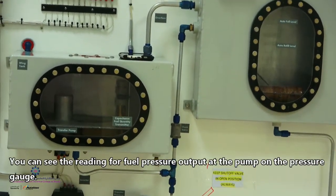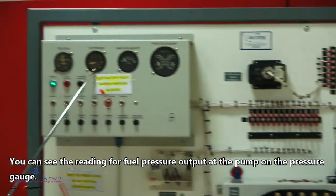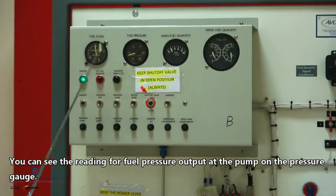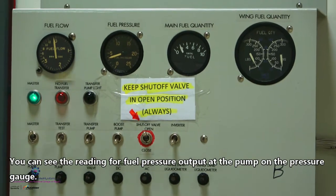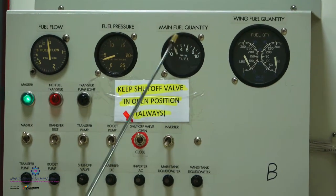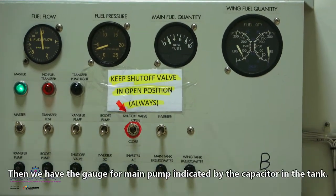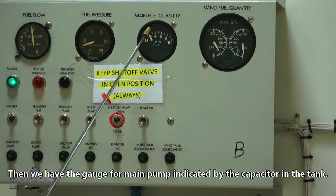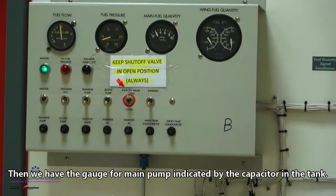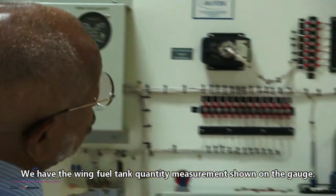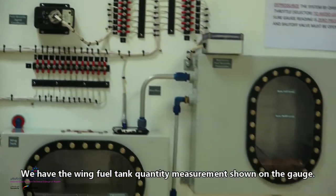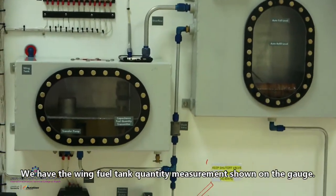As you see here, the reading here, fuel pressure. This is the fuel pressure. It is the reading from the output of the pump. And now, this is the main quantity fuel. It's reading here. The capacitor is giving you the reading of the fuel you have. So, here is the wing fuel pump. You see that it gives you the reading of whatever fuel we have so far.